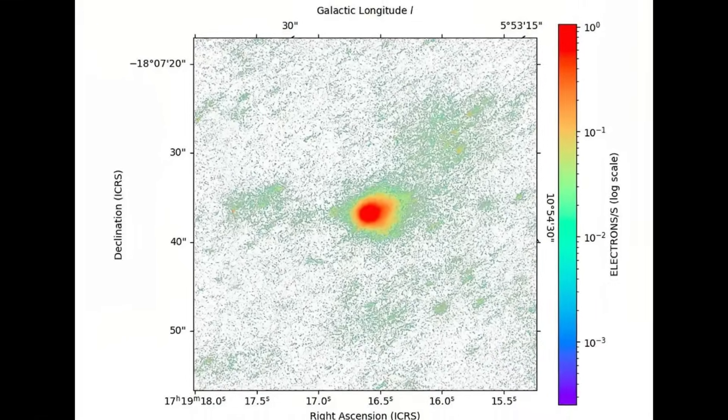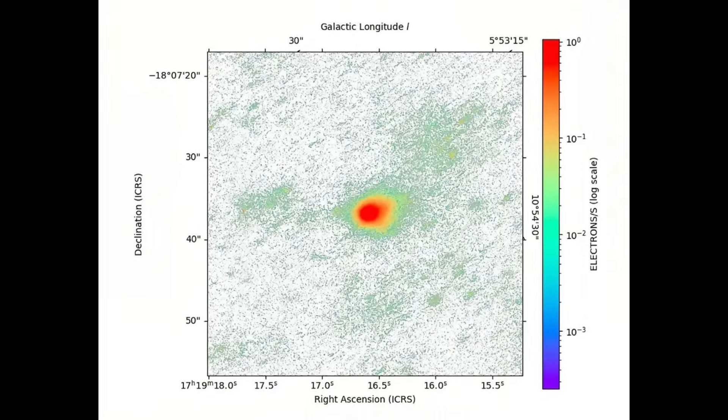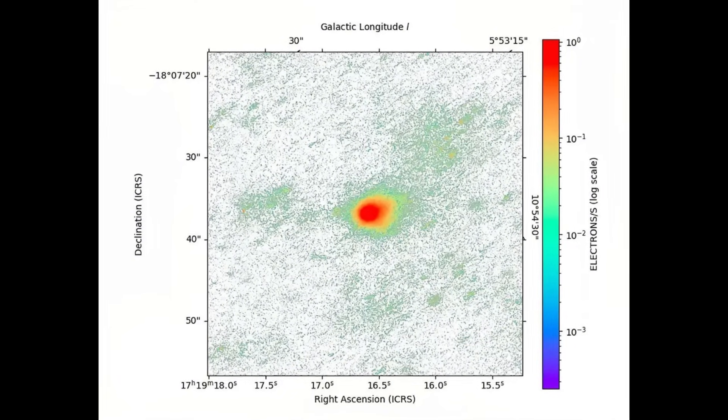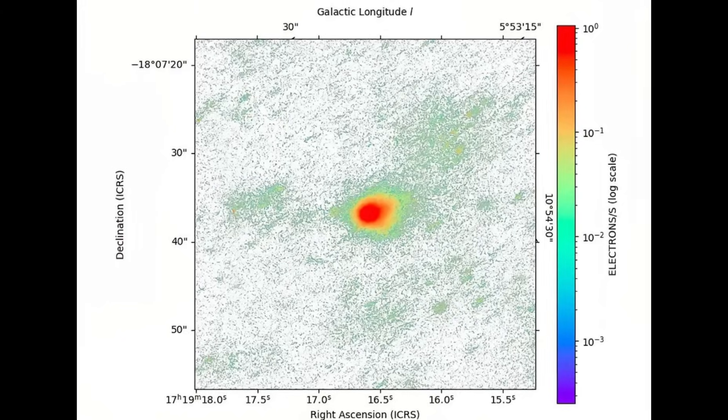Frozen elements, long dormant in the cold of interstellar space, were now volatilizing, producing new molecules and altering its spectral fingerprint. This shift added another layer of strangeness to an already perplexing visitor.